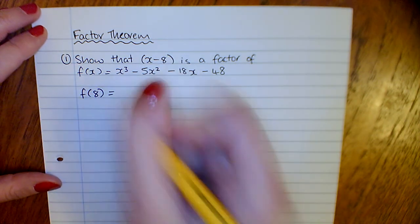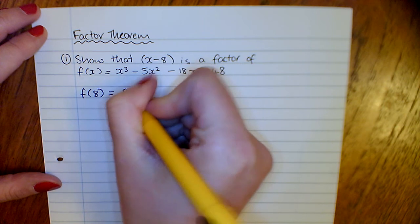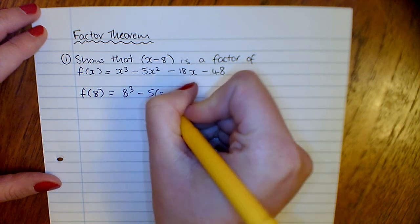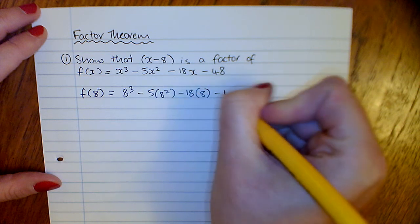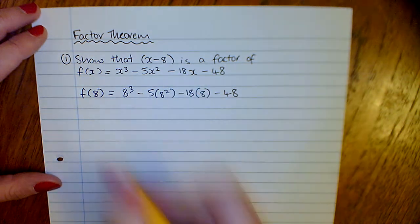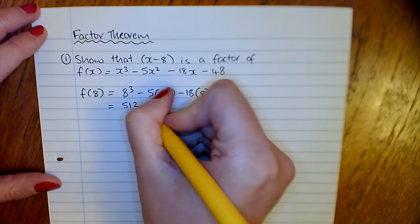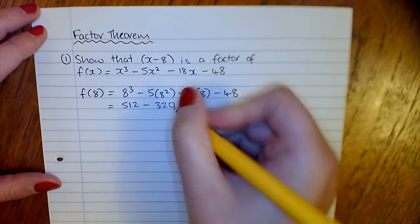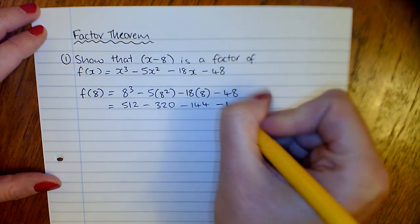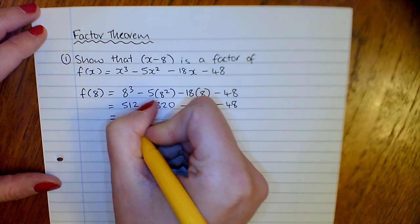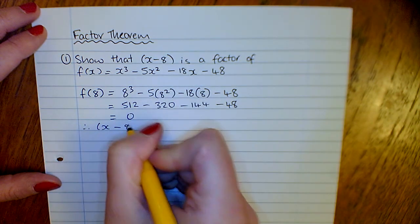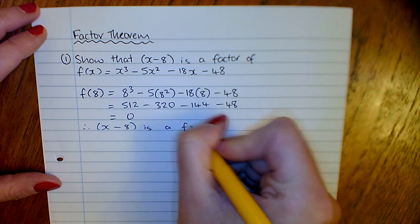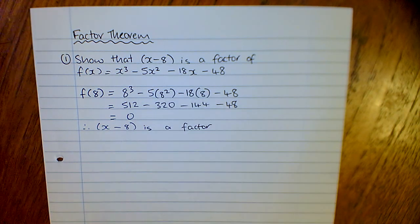So we have to find f of 8. That's 8 cubed minus 5 times 8 squared minus 18 times 8 minus 48. So that's 512, that's 320, 144 minus 48, and that is 0. Therefore x minus 8 is a factor. There's no remainder, so it is a factor.